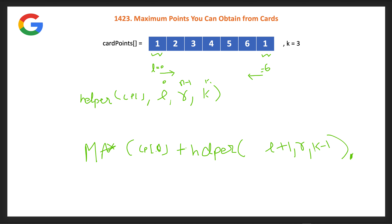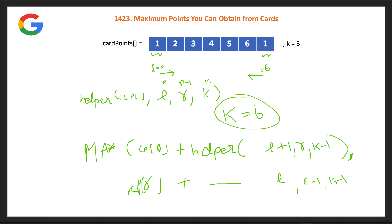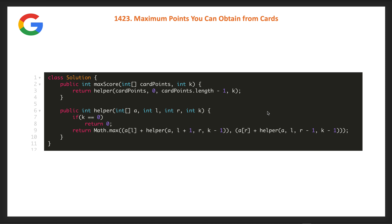Similarly, we pick from the right: add cp[r] and call helper(l, r-1, k-1). This is the recurrence relation. The base case is: whenever k becomes zero, meaning we've already selected k cards, we return zero, and the recursion folds up to give us the answer. You can pause the video and try to code this yourself.